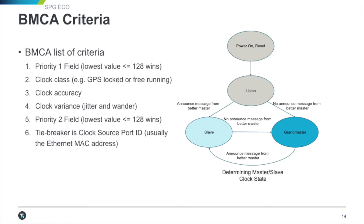The BMCA list of criteria for determining which clock is best master: Priority 1 field — the lowest number below 128 wins, so you can configure that within the device to force it to be grandmaster. Class of the clock: is it GPS or free-running? GPS always wins. Clock accuracy — how stable is the clock? Clock variance — jitter and wander. If all those are equal, it drops down to priority 2, where the lowest value below 128 wins. You can configure priority 1 and priority 2, and which would step in to take over. A tiebreaker, which you'd try to avoid, is determined by the Ethernet MAC address of the hardware.